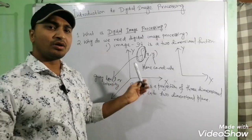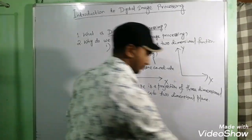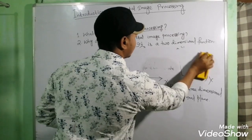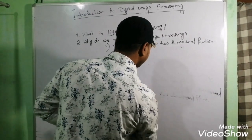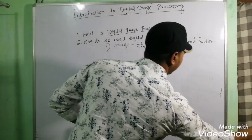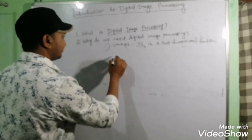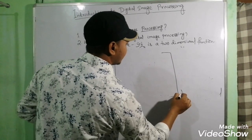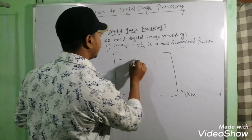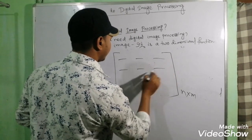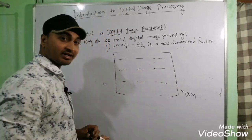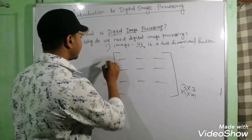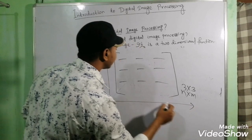Image is always represented in a matrix form. We represent the image in a matrix form. Here, suppose an n×m matrix. These are the elements of this matrix, represented in a two-dimensional axis, where this is y and this is x.